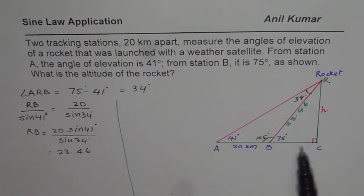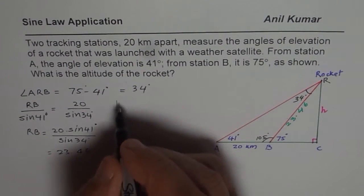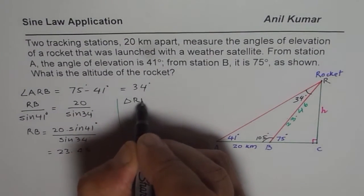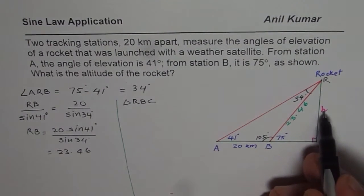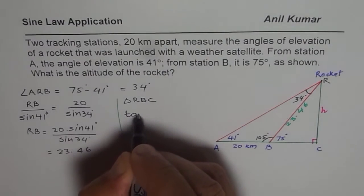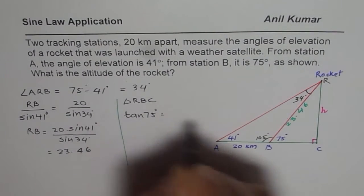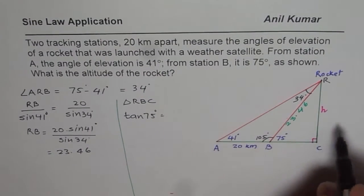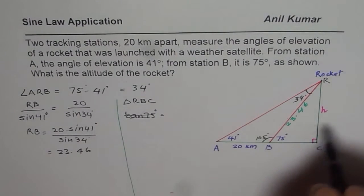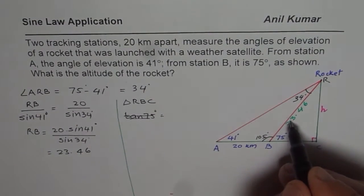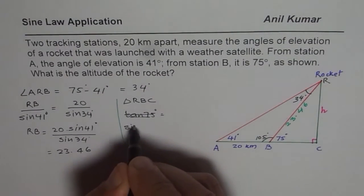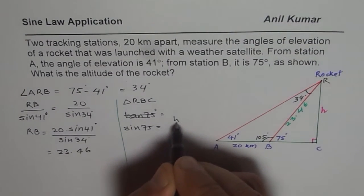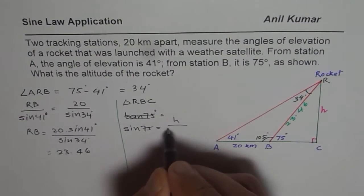Now let's find RC using the triangle RBC. So in the triangle RBC, which is right triangle, you can find height by using tan of 75. So tan of 75 degrees is equals to height, actually I should have used sine, since I know the hypotenuse, adjacent side and the opposite side. So I should use sine of 75 degrees, which is height h over 23.46.